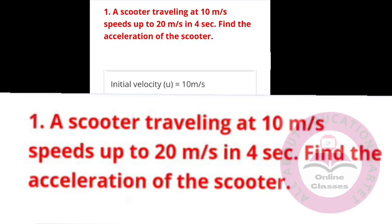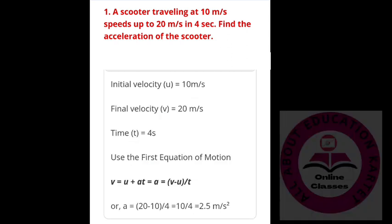First question: a scooter traveling at 10 meters per second speeds up to 20 meters per second in 4 seconds. Find the acceleration of the scooter. Initial velocity U is 10 meters per second. Final velocity V is 20 meters per second.